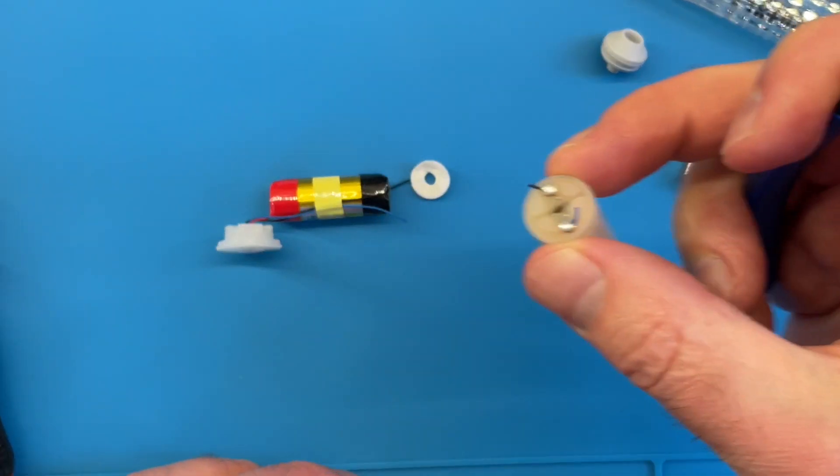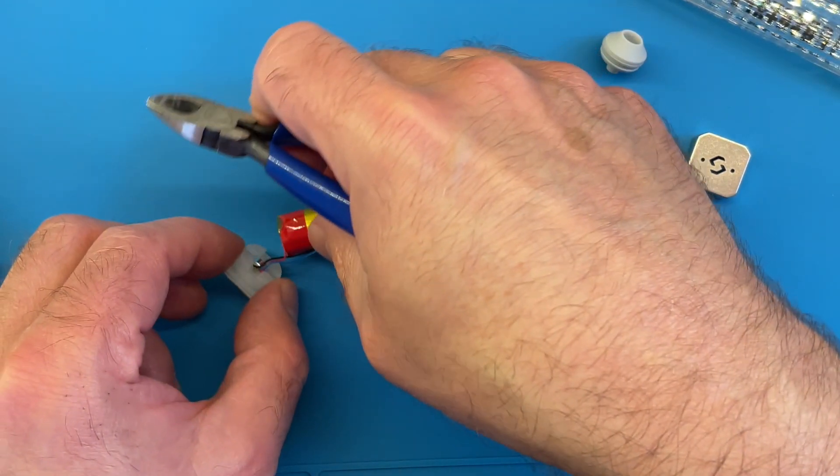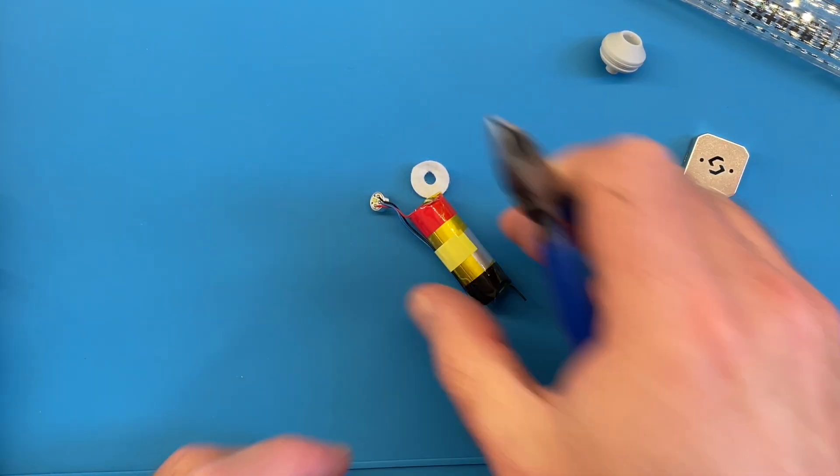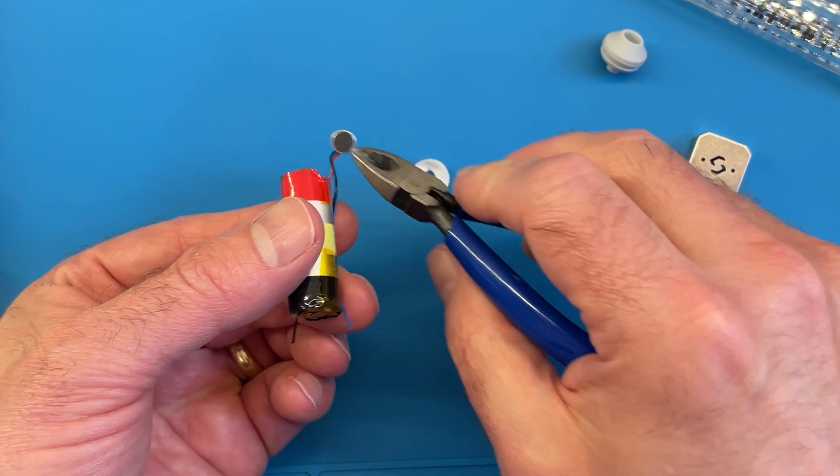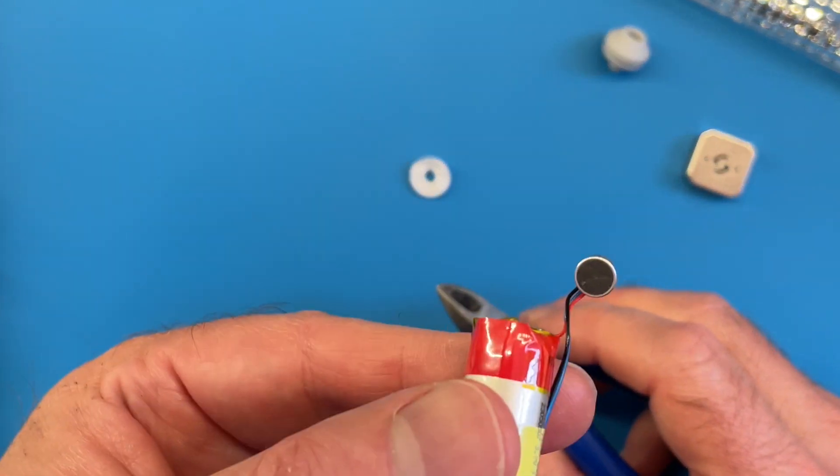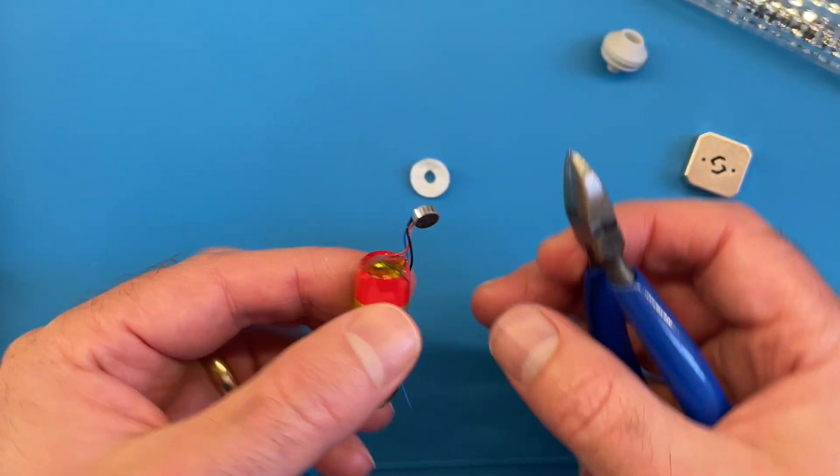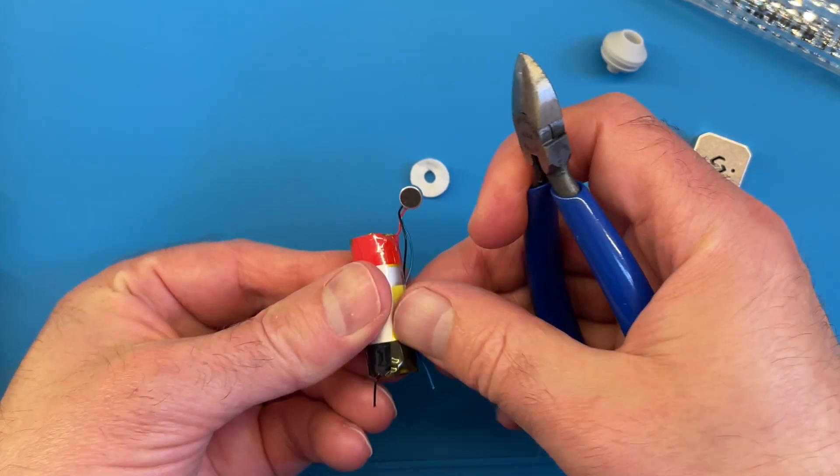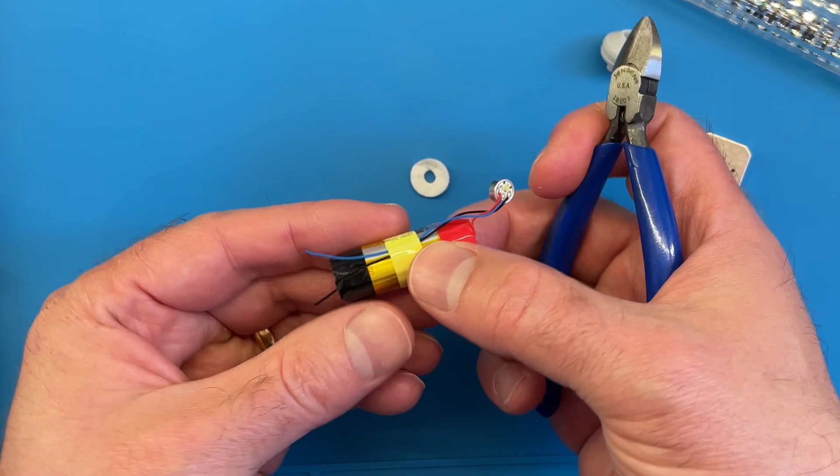And we'll dispose of that. And then we also don't need this piece either. Here's the little sensor that detects when you're breathing in. So for now we can just chop that off. And then we'll see what size of battery we've managed to find.